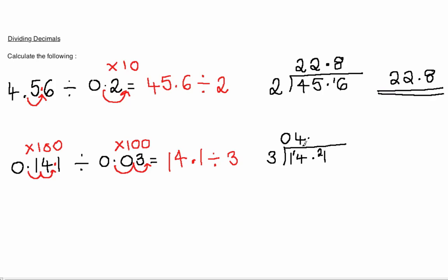Remember the decimal place. 3 into 21 goes 7 times. So our answer here is 4.7.